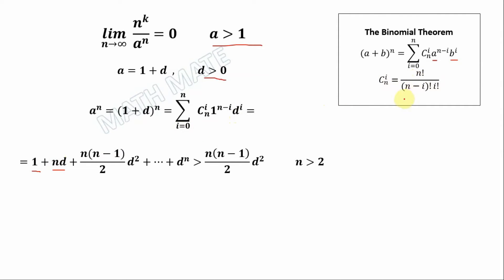In the next step, we put i equal to 2: n factorial divided by n minus 2 factorial. We express n factorial as n times n minus 1 times n minus 2 factorial, cancel the factorials, and remain with n times n minus 1 in the numerator, divided by 2 factorial — multiplied by d to the power of 2, and so on.